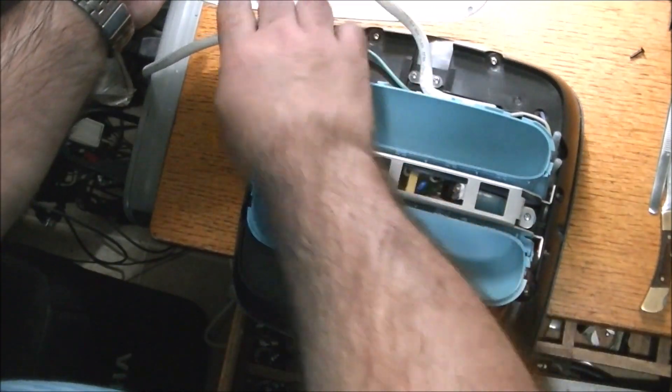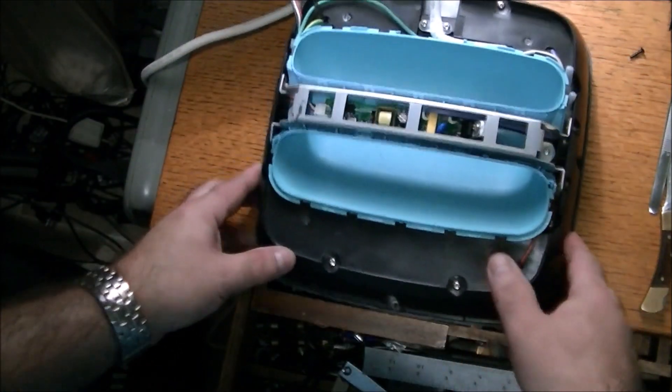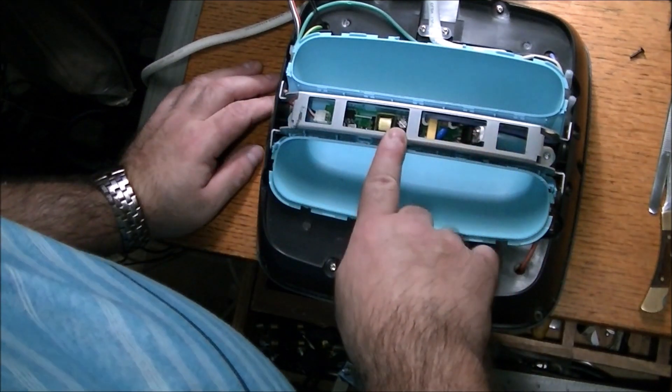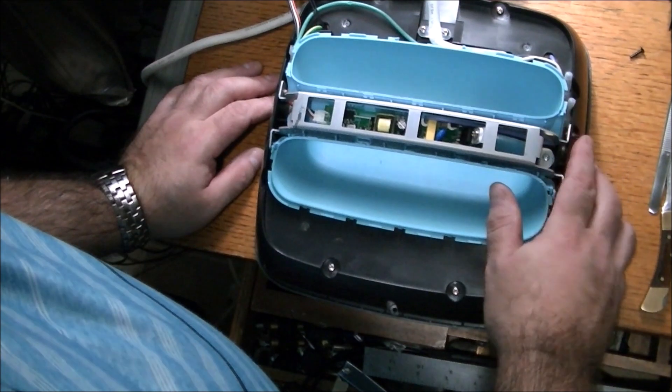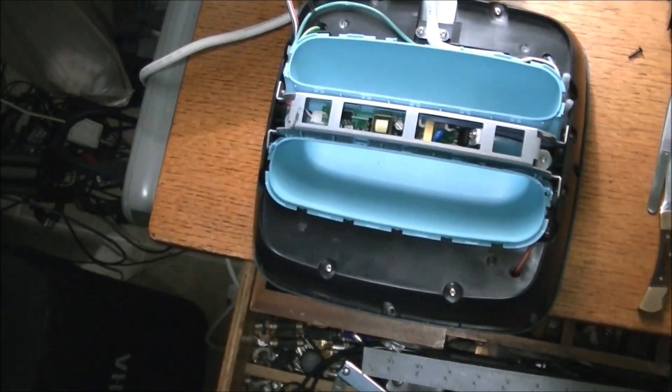But here's the circuit board. Is there anything damaged on this board? We don't know at this point. And there's more components underneath here. At first glance I don't see anything of any issue there. So we have to have a closer look now at this heat press.